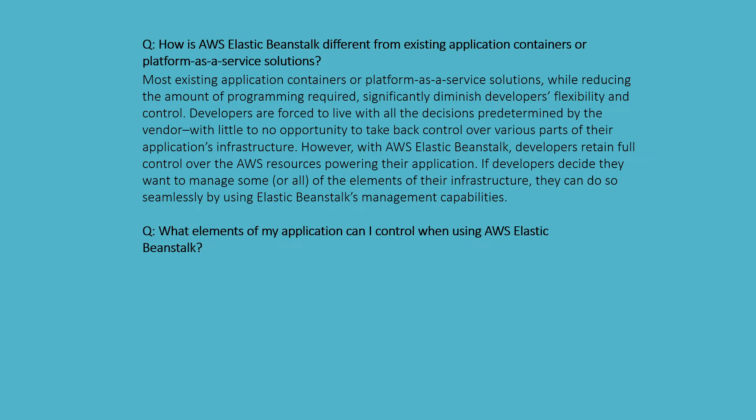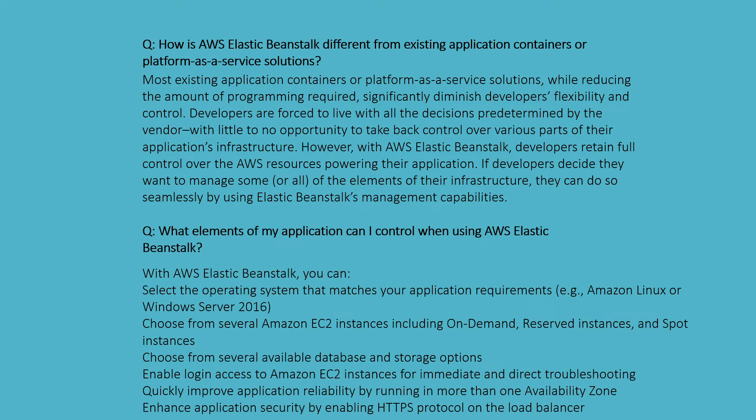What elements of the application can I control when using AWS Elastic Beanstalk? With Elastic Beanstalk, you can select the operating system that matches your application requirements, such as Amazon Linux and Windows Server 2016. You can choose EC2 instance types including on-demand, reserved, and spot instances, choose from several database storage options, enable logging access to EC2 instances for troubleshooting, run in more than one availability zone, and enable HTTPS on the load balancer.